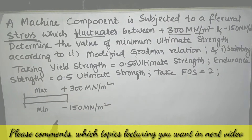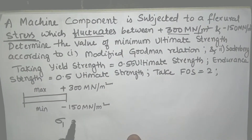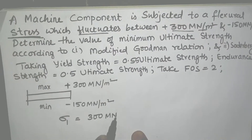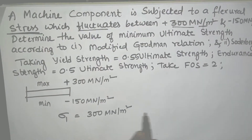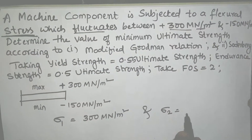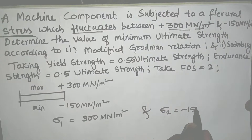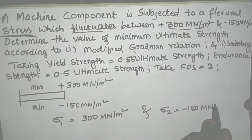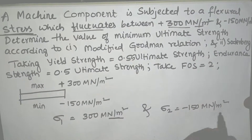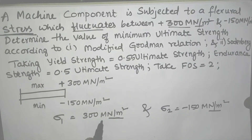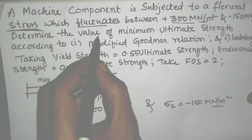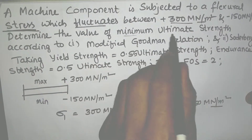Sigma_1 as maximum will be taken as 300 mega Newton per meter square, and Sigma_2 as minimum will be minus 150 mega Newton per meter square. Generally the unit of stress is Newton per mm square, so no conversion is needed here.